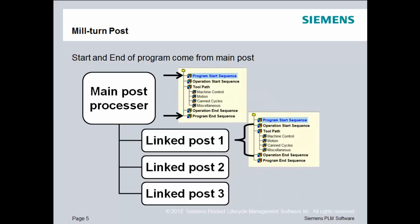Now remember that the main post is responsible for the program start sequence and the program end sequence. That means you have to make sure that the main post processor has the correct and proper code at both the program start and at the program end. However, you do not need to concern yourself with program start and end sequence with any linked post — they will never be called. The linked post processors do have operation start sequence, toolpath control, and operation end sequence, so you need to make sure that those functions are working properly.